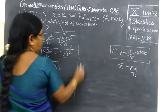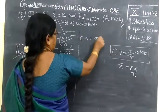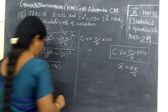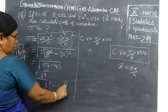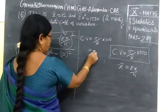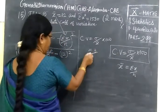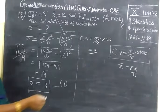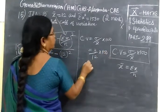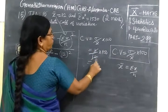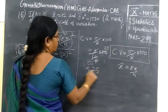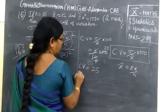Now we will find CV. So CV equal to Sigma by X bar into 100. So if it comes under 2 mark with 1 mark, then for the answer 1 mark. Sigma is 3 by X bar, X bar is 12, into 100. Then here 4 times, we will cancel, 25.